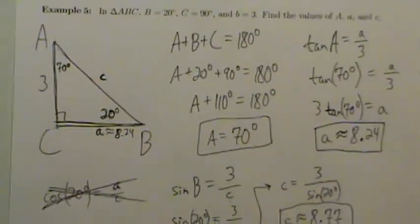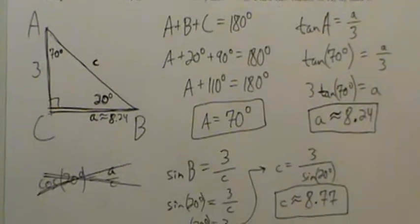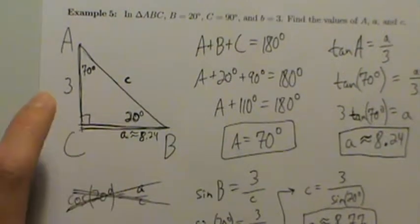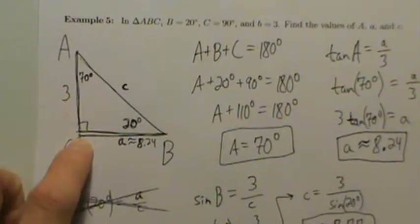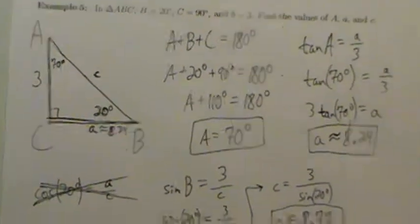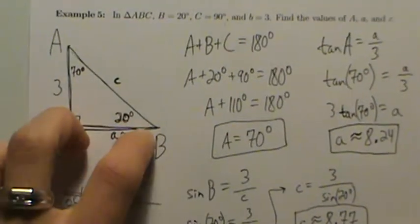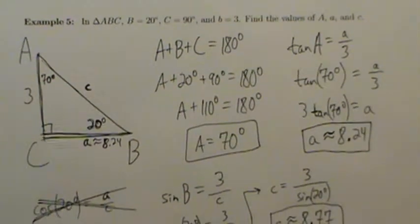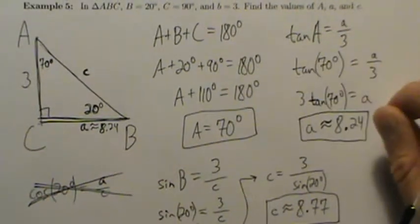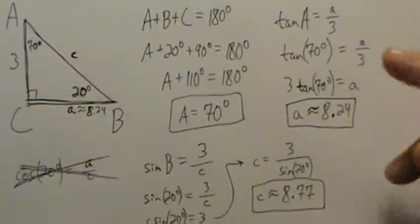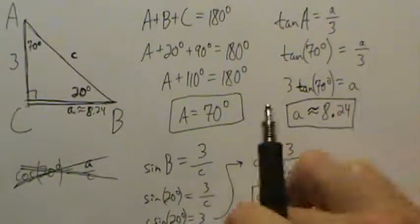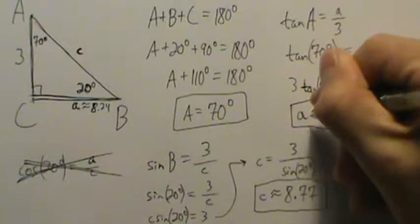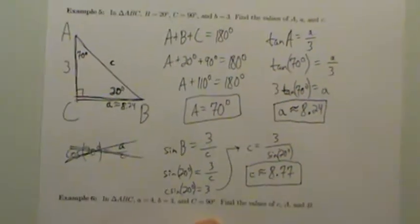That's example 5 — solving a right triangle. We were given a side-angle-angle configuration: two angles and one side. Since we had two angles, we found the third right away using the fact that all three angles sum to 180 degrees. Then we used basic trig functions — tangent and sine — to find the other sides. Remember to avoid using approximations to find other values when you can.